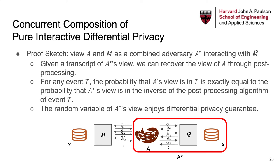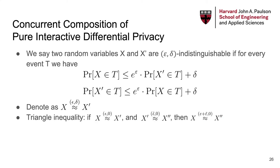Because of this post-processing algorithm, for any event T, the probability that A's view is in T is exactly equal to the probability that A-star's view is in the inverse of the post-processing algorithm of event T. Also, since A-star is well-defined, the random variable of A-star's view enjoys the differential privacy guarantee. To introduce the final conclusion, we say that two random variables X and X' are epsilon-delta indistinguishable if for every event T, the probability that we see T for X is at most e to the epsilon times the probability that we see T for X', plus delta, and vice versa.